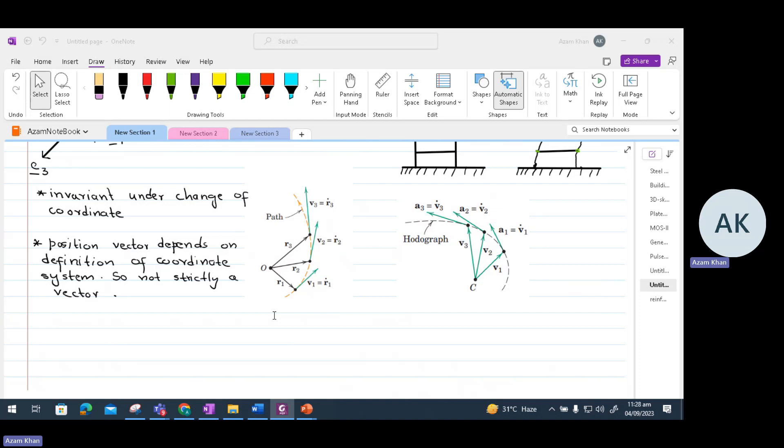The other important point is that a position vector depends on the definition of coordinate system. A position vector is not strictly a vector. As we can see in the path diagram of this figure, the three points are described by position vectors, R1, R2, and R3. These position vectors depend on the definition of coordinate system. These position vectors will be different in the case of Cartesian or spherical coordinate system. So, the position vector is not an invariant and therefore, strictly speaking, it's not a vector.